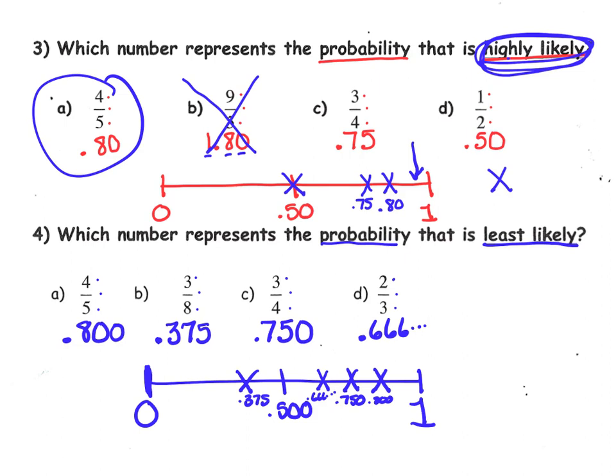But clearly, it is .375 that is the closest to 0. It would be the least likely of them all. So, your answer is choice B. This concludes page 3. Make sure you're copying all the notes. Pause the video if you need to pause the video while you're watching it.